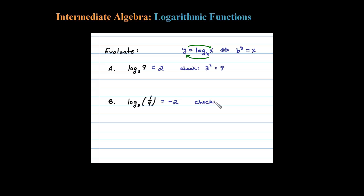If we check that using the definition, 3 to the negative 2 power should equal one ninth, and it does. Because remember, the negative 2 power is really 1 over 3 squared, which is certainly one ninth.